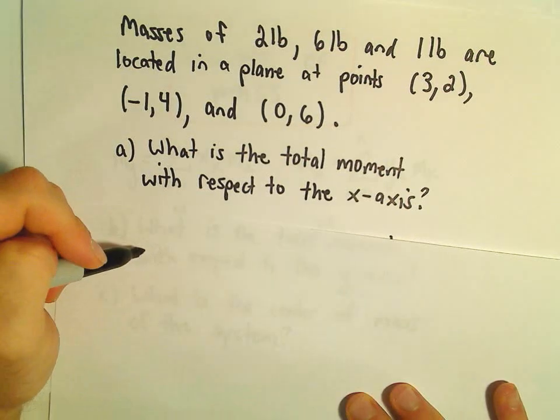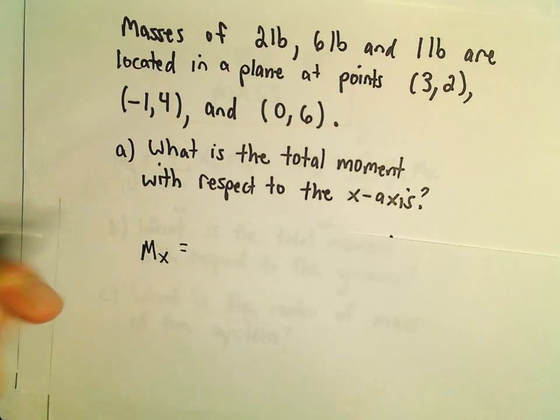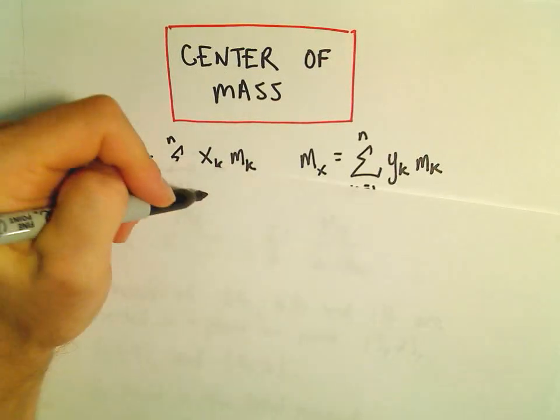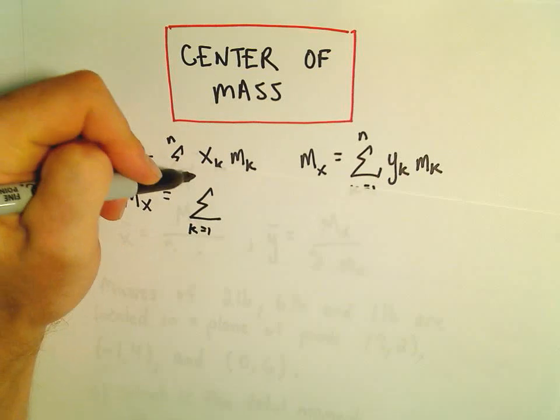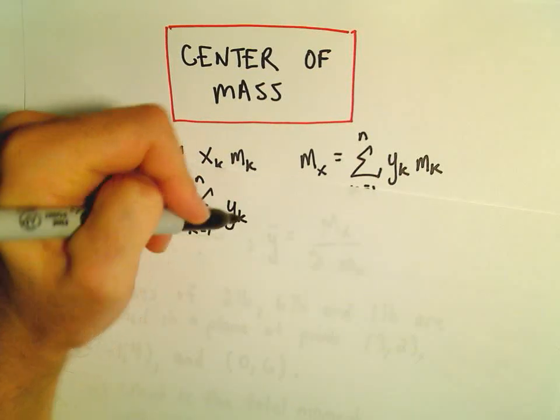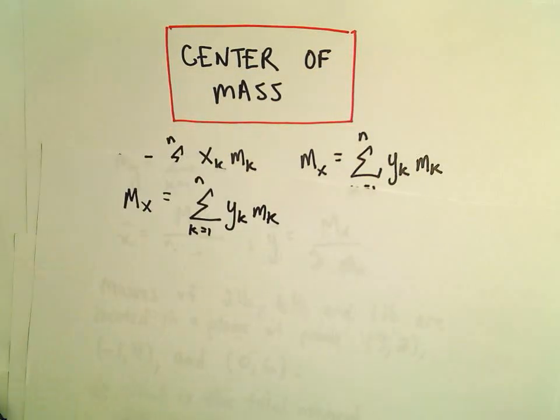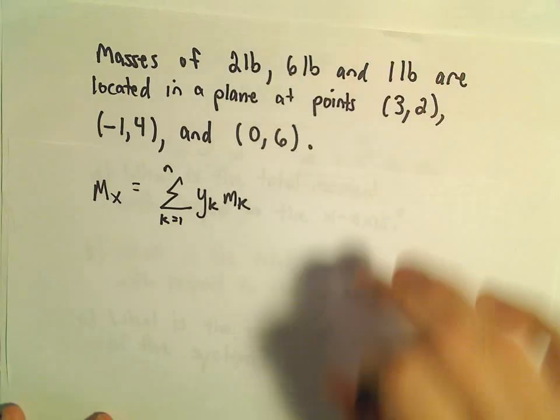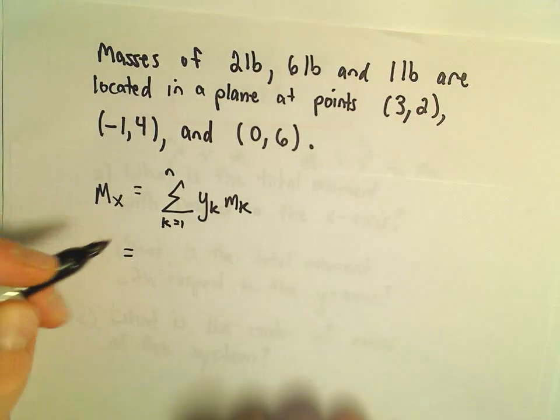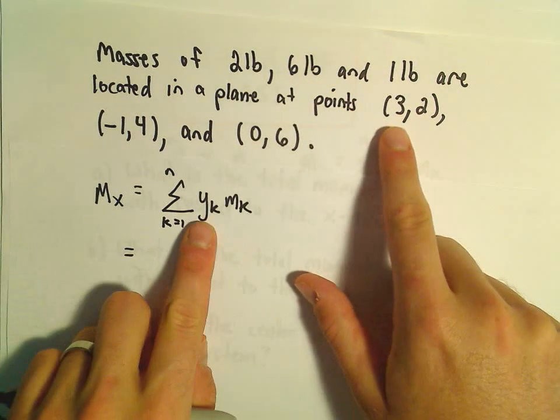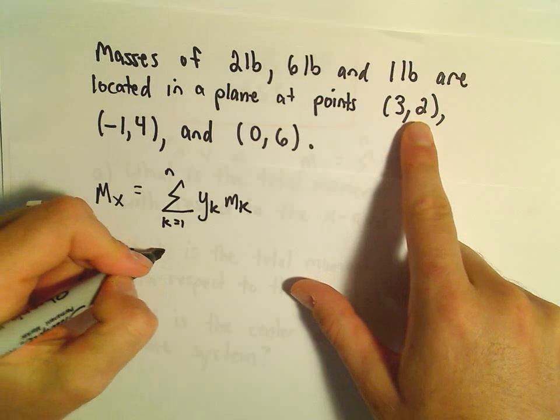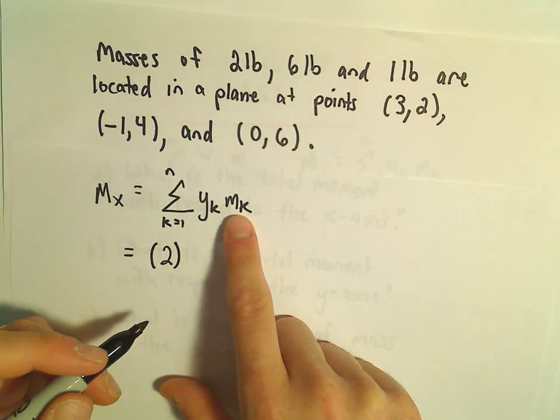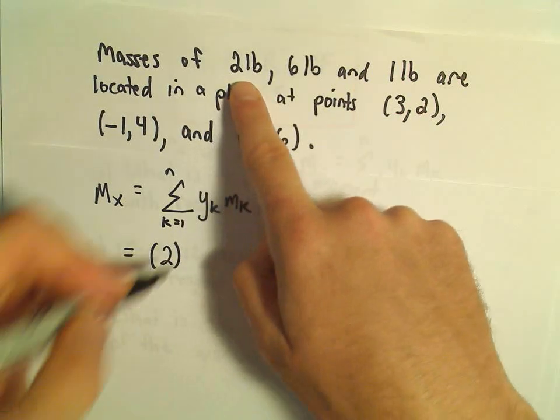So to get the moment about the x-axis, we'll use our formula, the summation k equals 1 to n of y sub k times m sub k. What that says to do is look at each point, and we'll take the y-coordinate. So the first point has a y-coordinate of 2, and then we multiply that by its corresponding mass, which is also 2.